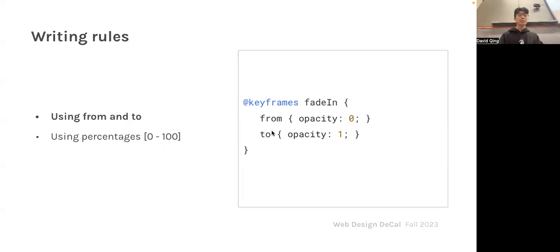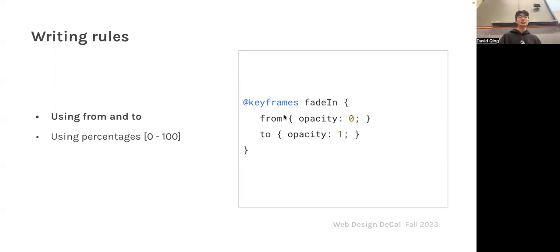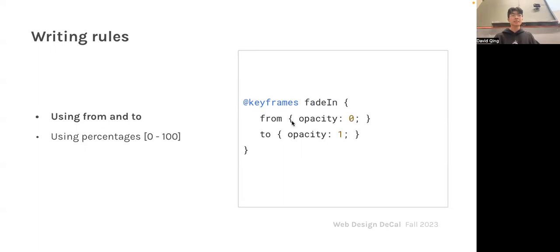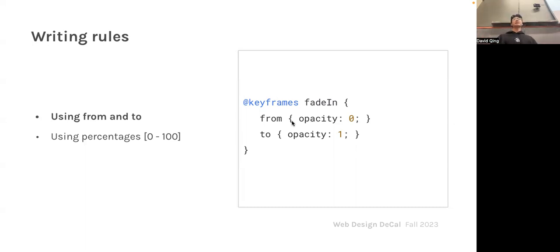There are two methods for defining keyframe rules. The first is using `from` and `to`. `from` is your starting state and `to` is your ending state, and your animation will smoothly traverse between them. For example, a 'fade-in' animation starts with opacity 0 — so you shouldn't see the element — and ends with opacity 1, and in between it will slowly and gradually fade in.